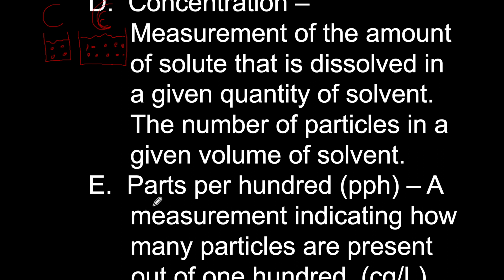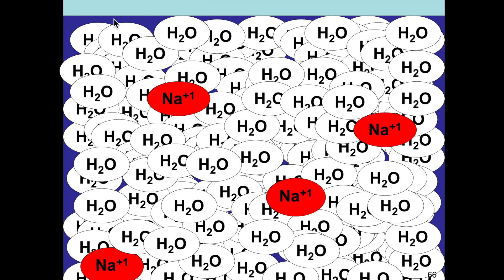One way of expressing concentration is in a unit called parts per hundred, or PPH — a measurement indicating how many particles are present out of 100. For example, if you have a beaker of water with 100 total particles, and 4 of those are sodium ions, that is referred to as 4 PPH.